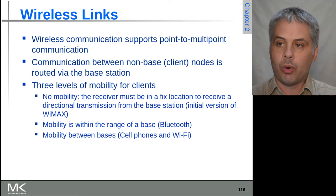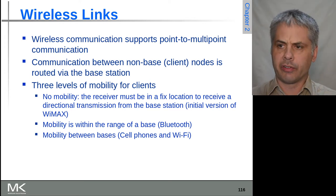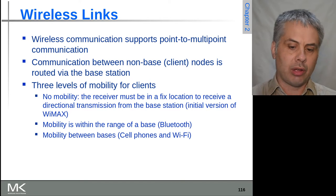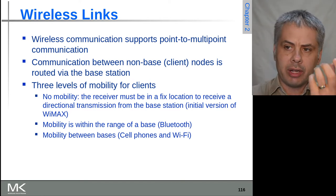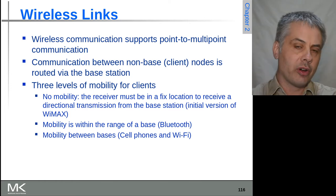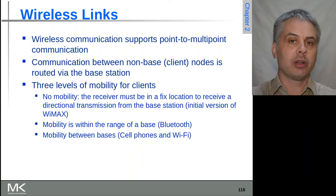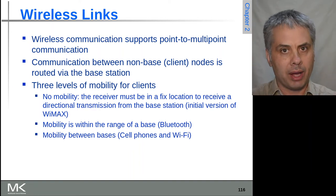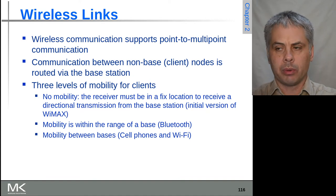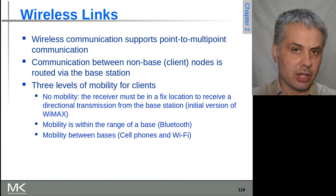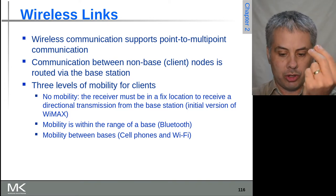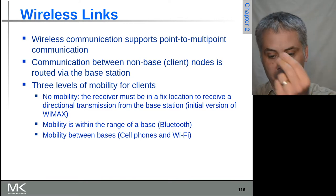Let's look at wireless communications links from a different perspective. A transmitter generally transmits in every direction, so with a mobile phone tower or Wi-Fi access point you can be almost anywhere within range and receive communications. This is naturally what we call a point-to-multipoint communications mode — from one transmitter to multiple receiver locations.